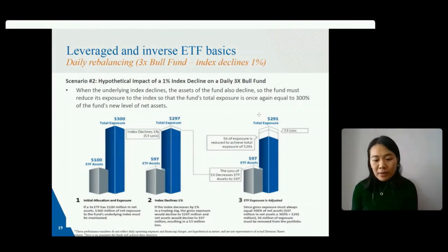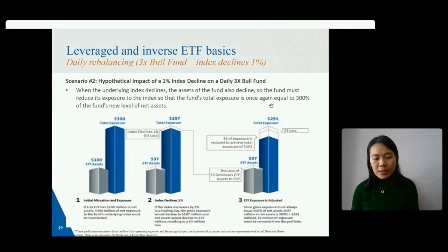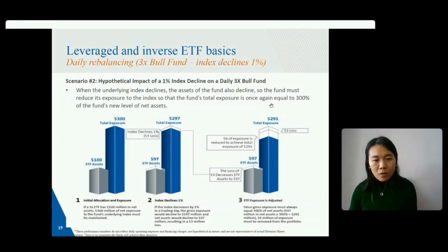Conversely, when the tracking index declines, the assets of the 3x leverage ETF also decline, so the ETF must reduce its exposure to the index at daily market closing time so that the ETF's total exposure equals 3x the new net asset level for the next day. Essentially, the ETF levers up on up days and levers down on down days — this is the main cause of the compounding effect I'll cover in the next slide.